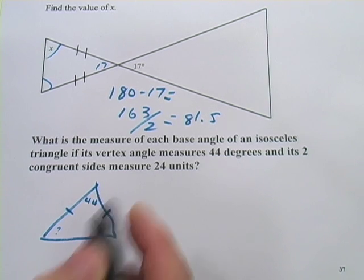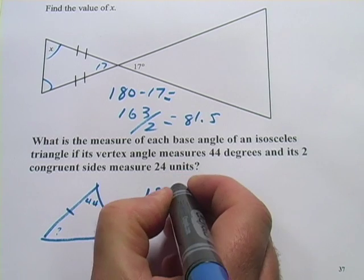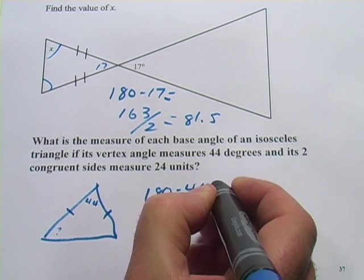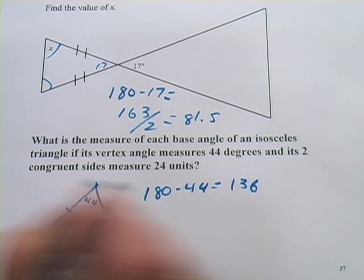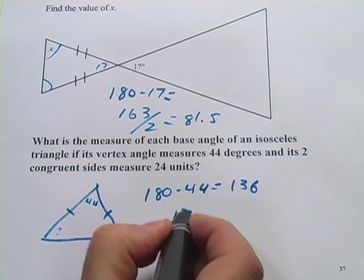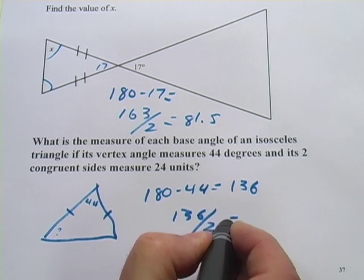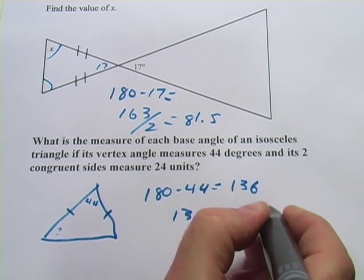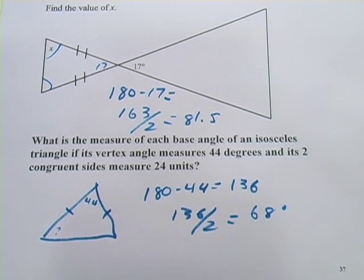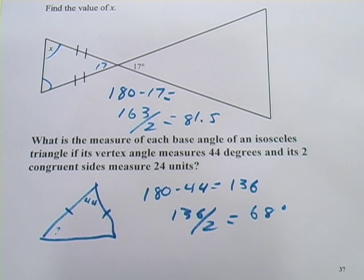Once you've got that vertex angle, you simply subtract it from 180. So that's 136. And then you divide that by 2. So the base angle here is 68 degrees. So that's a little bit of work with isosceles triangles.